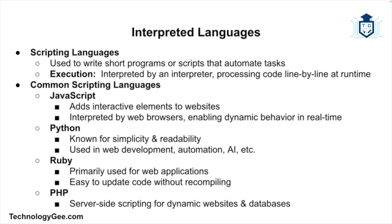Examples of scripting languages include JavaScript, which is primarily used for adding interactive elements to websites and is interpreted by web browsers in real time, enabling dynamic behavior. Python is a versatile and widely used scripting language known for its simplicity and readability, used in web development, automation, artificial intelligence, and much more. Ruby is often used for web applications and is interpreted at runtime, making it easy to make changes without recompiling. PHP is a server-side scripting language used for web development, especially for dynamic websites and databases.